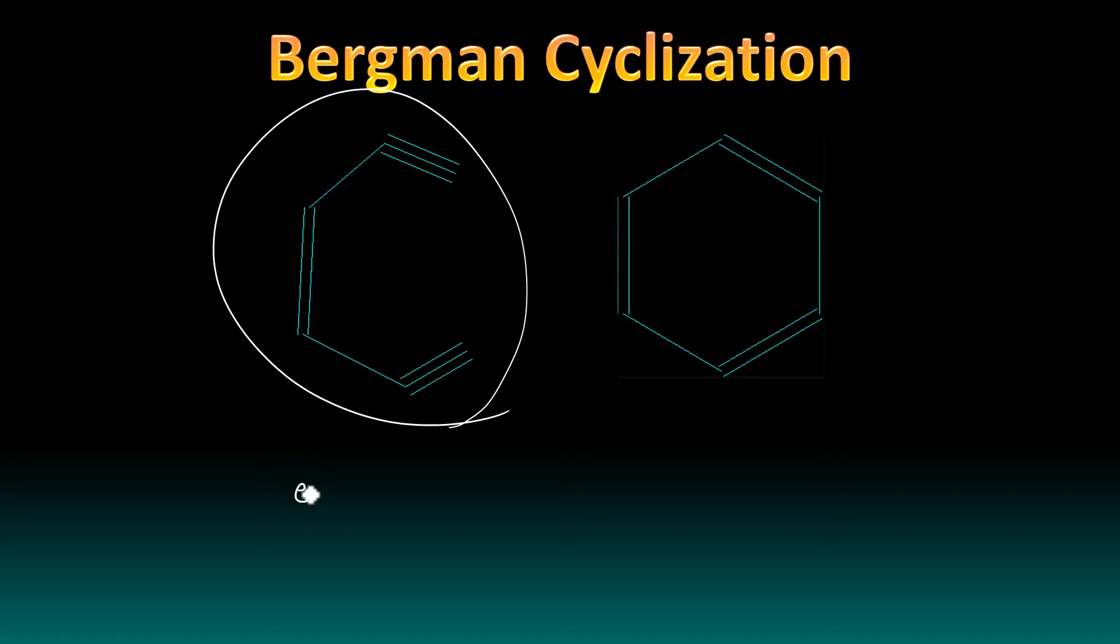It's a very beautiful reaction. We have an acyclic molecule which we call as enedine, and this enedine is cyclizing to give you an aromatic compound. So not only is the acyclic molecule becoming a ring, a cyclic molecule, on top of that it is becoming an aromatic molecule.